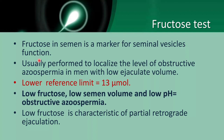Remember: fructose in the semen is a marker for seminal vesicle function. We usually perform the fructose test when there is azoospermia in a male and the volume of semen is also less. The lower reference limit is around 13 micromoles. Low fructose combined with low semen volume and low pH suggests obstructive azoospermia — because of the obstruction, fructose cannot pass, semen volume is low, and there is reduced alkalinity leading to acidic pH.